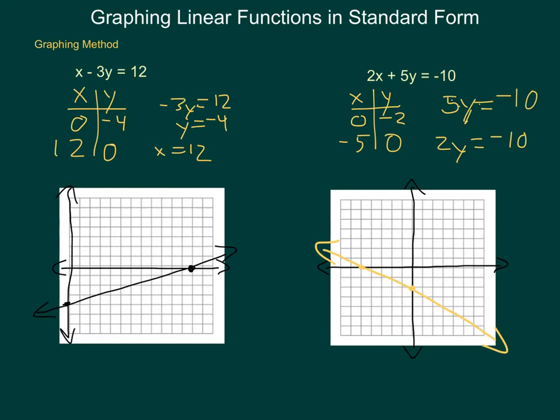When you are plotting your points, the exact coordinate is helpful, and then when you draw your line, use a straight edge to connect those points. So graphing standard form, we are simply finding these intercepts.